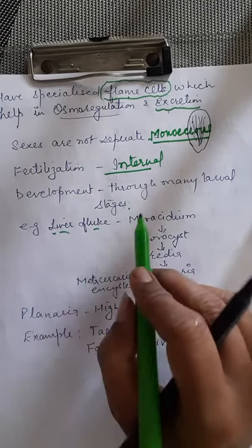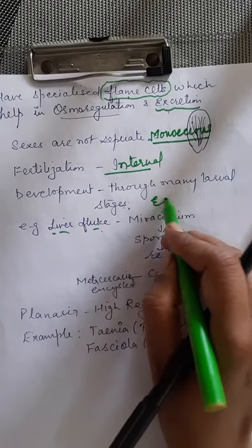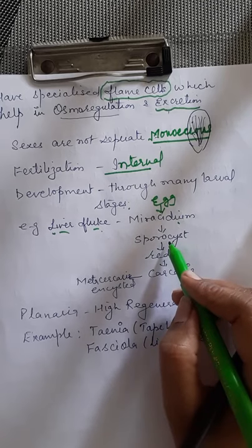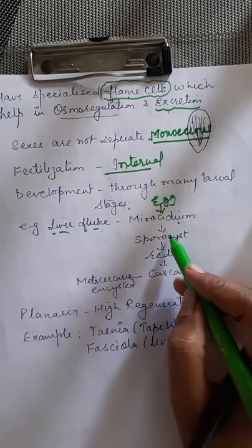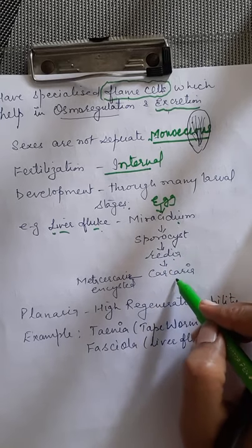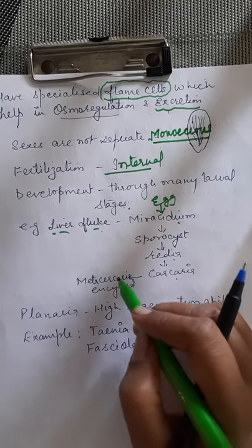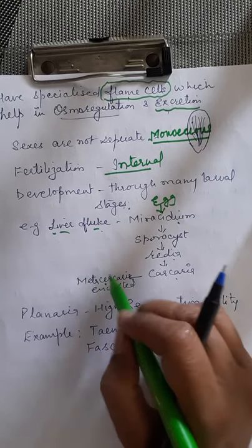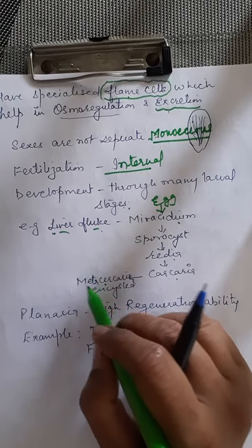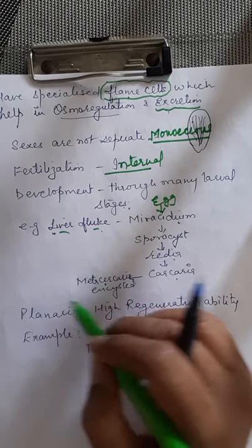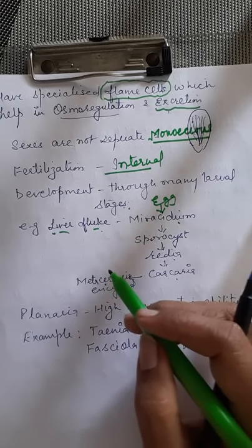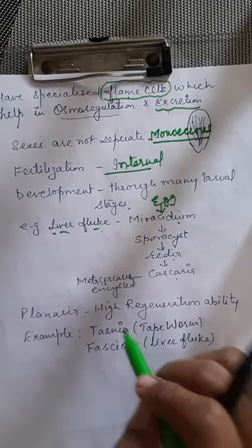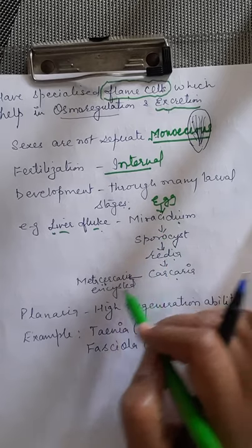For example, in the liver fluke: from an egg, a larva called Miracidium larva emerges. Miracidium then forms a cyst called sporocyst. From sporocyst, Redia develops; from Redia, Cercaria. Cercaria then forms a cyst around itself called metacercaria, which remains in the soil for a long time. When a goat or sheep eats leaves from that soil, the metacercaria attaches to the leaves and enters their body.